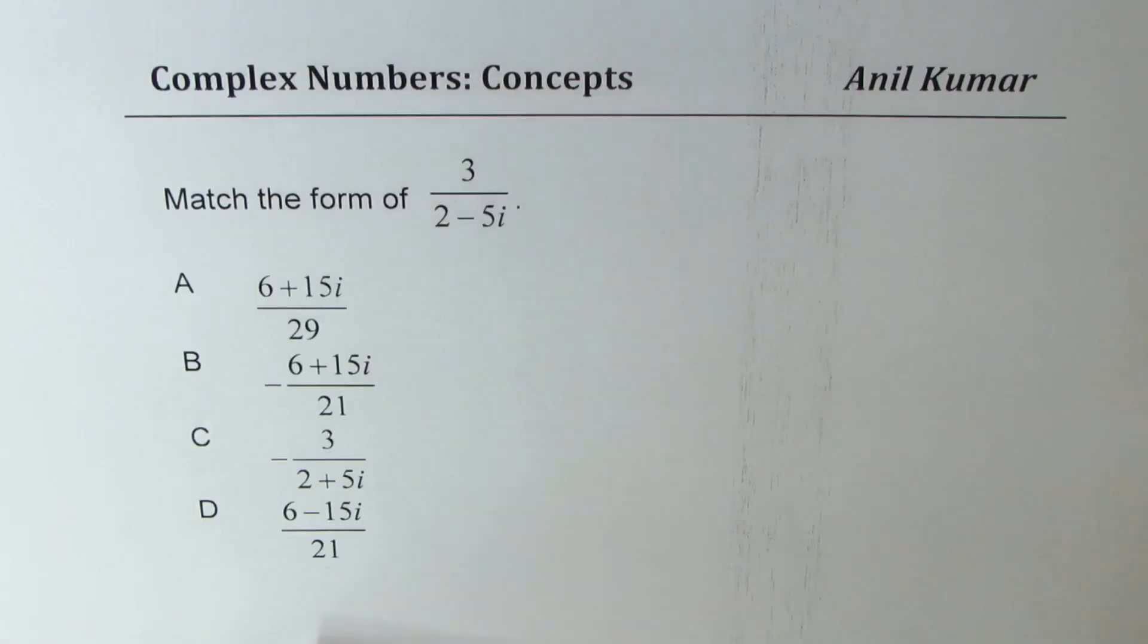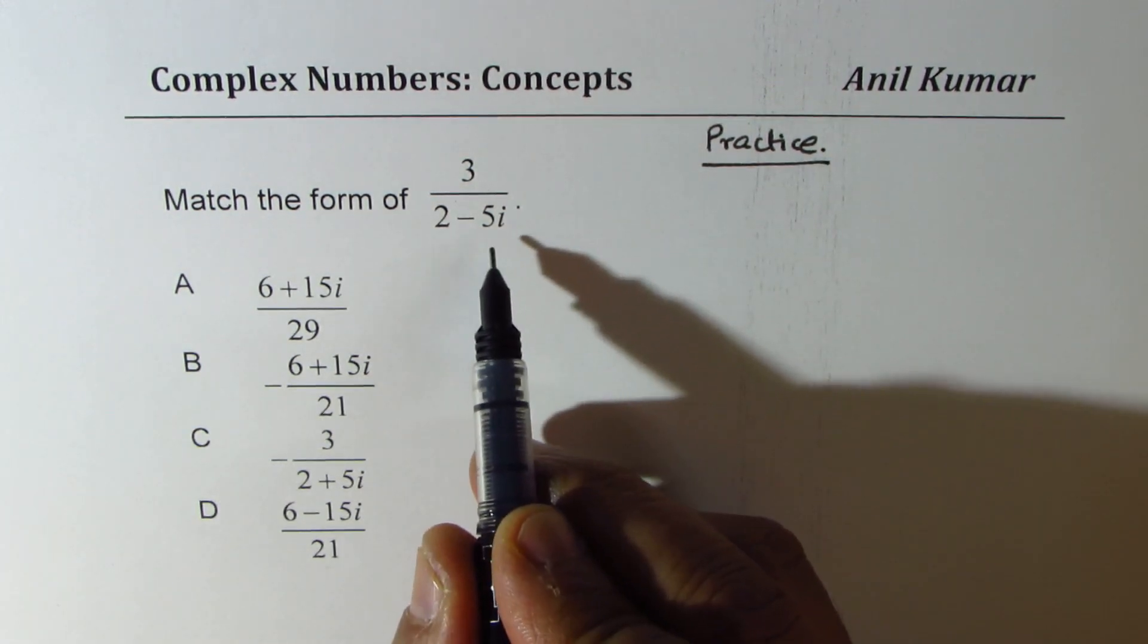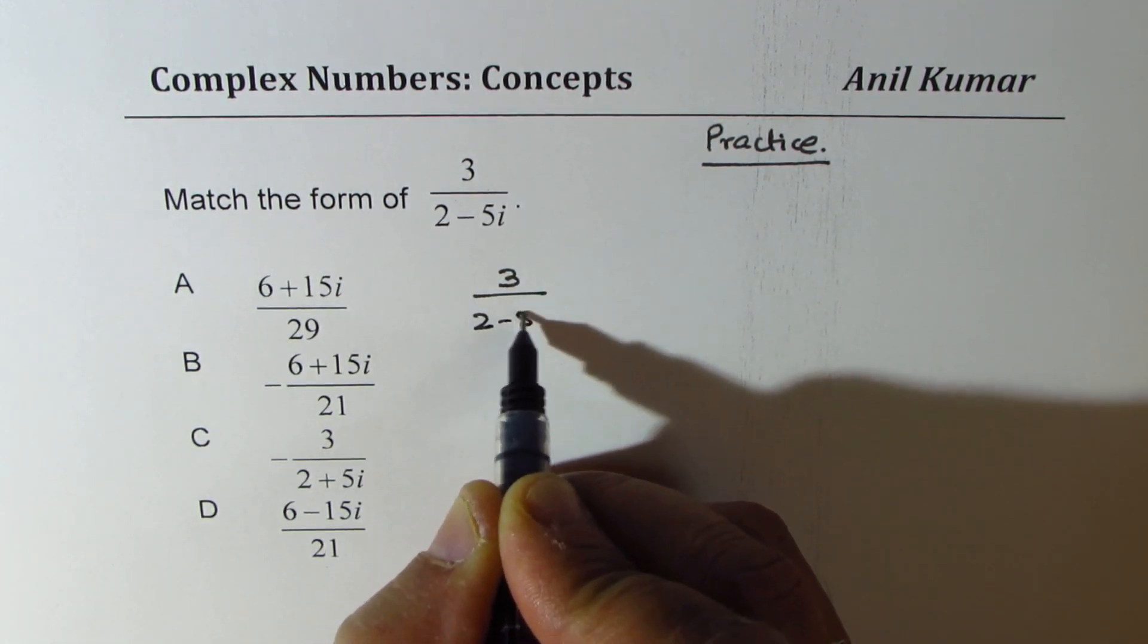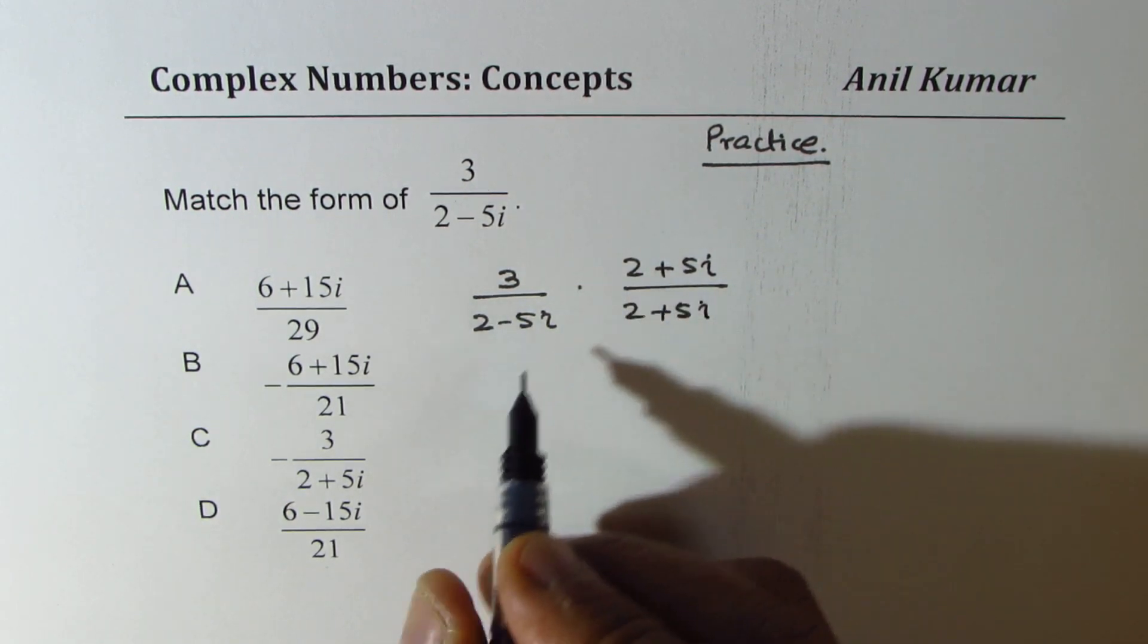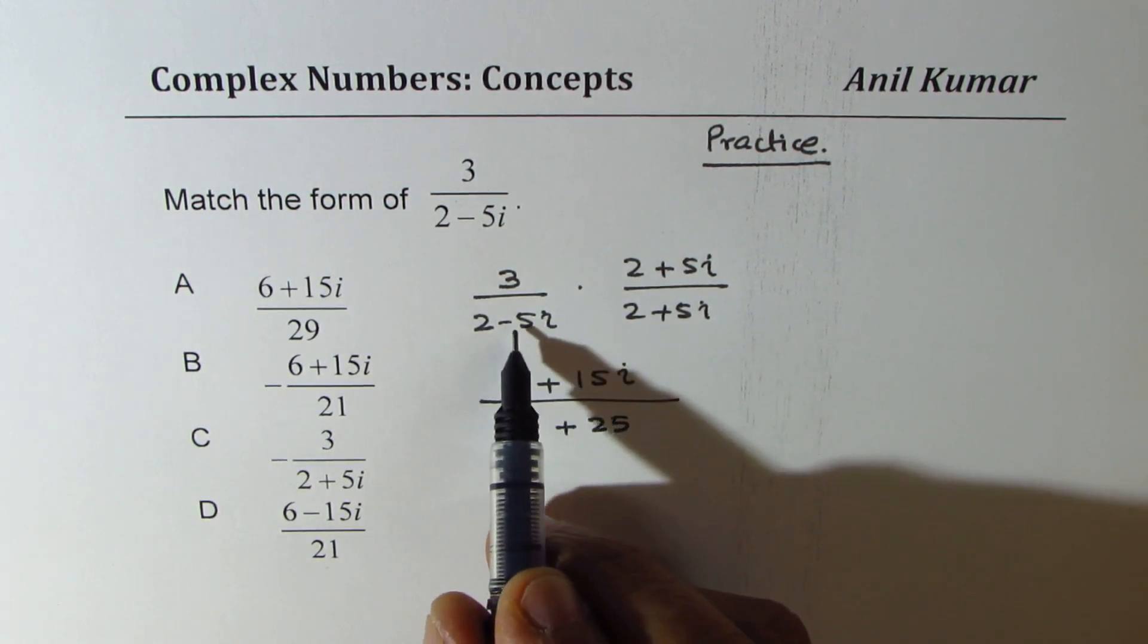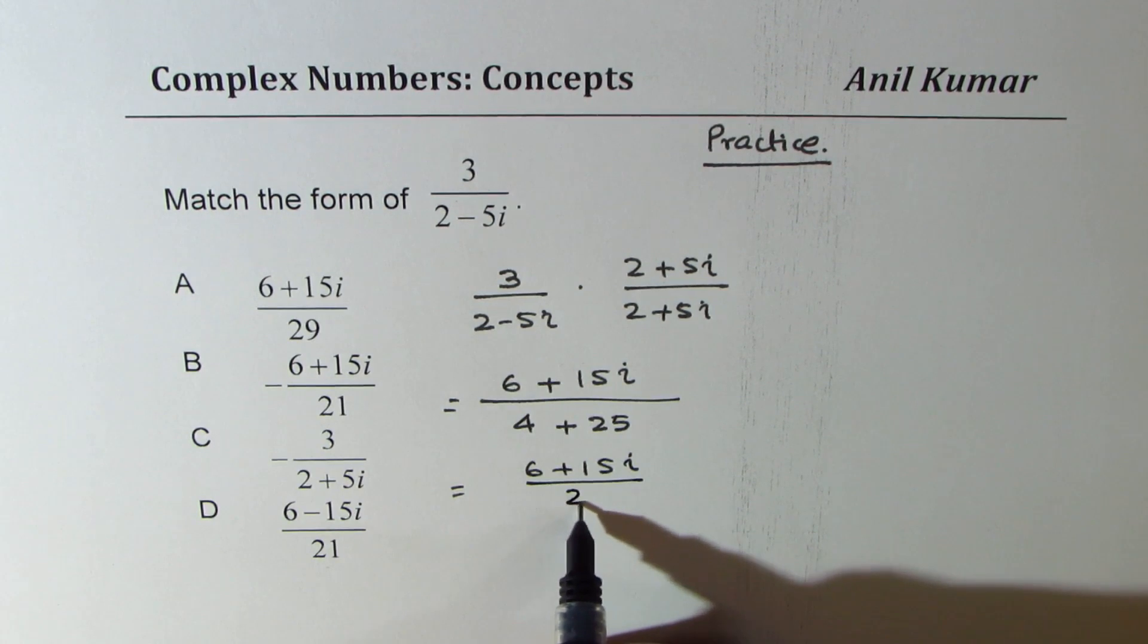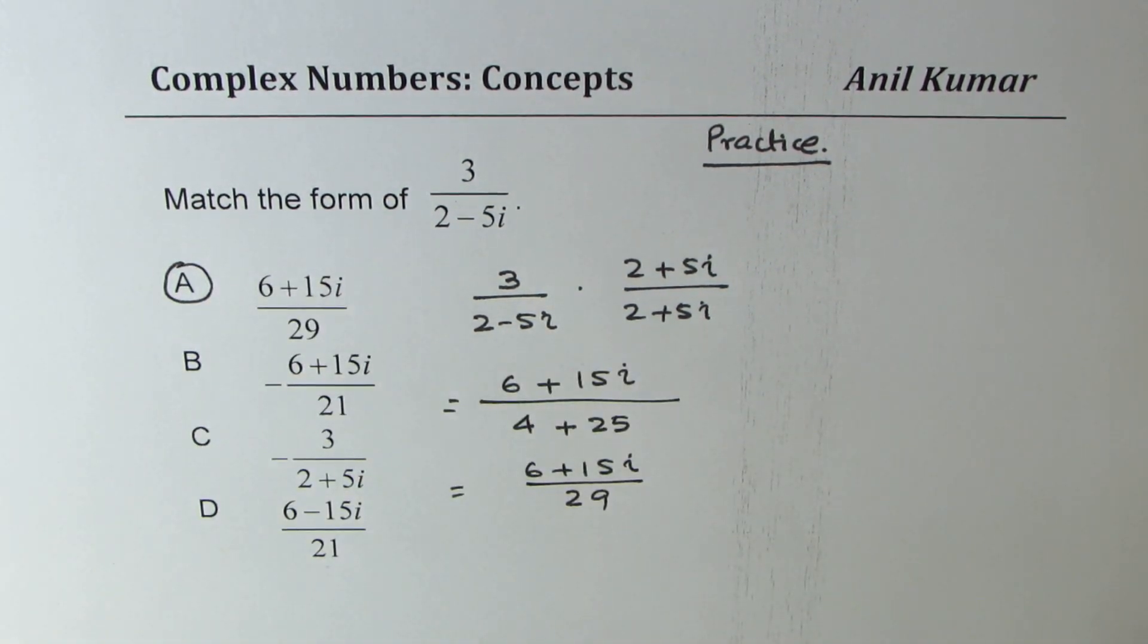Next question: match the form of 3 over 2 minus 5i. Let this be your practice question. This is similar to what we did just now. You need to rationalize by multiplying and dividing by its conjugate. So 3 over 2 minus 5i times 2 plus 5i divided by 2 plus 5i gives you 6 plus 15i in the numerator, and this becomes 4 plus 25, which is 29. So we get 6 plus 15i over 29, which is option a.